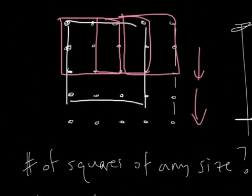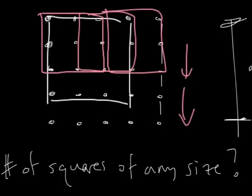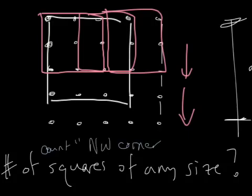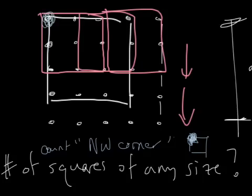Let's go all the way back to the grid. What if I told you this? What if I said, let's not count squares — let's count the northwest corner. That's weird. Okay. In other words, when I draw a square, I'm calling this the northwest corner. So, if I told you to draw a 4 by 4 square and its northwest corner was here, what would you do? You only got one choice, right?